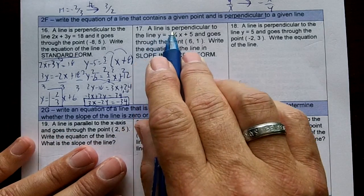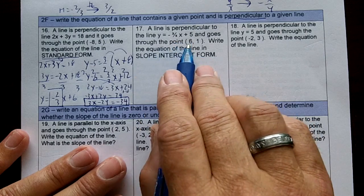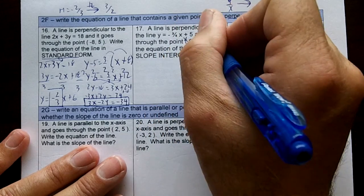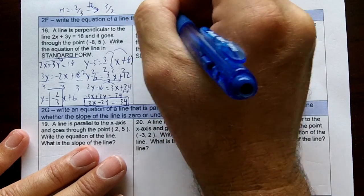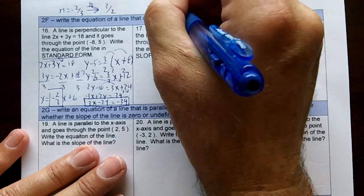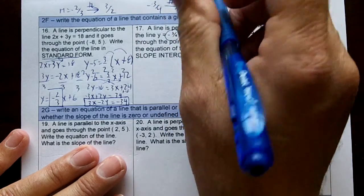Okay, number 17. My line is perpendicular to the line y equals negative 3 over 4x plus 5, and goes through this point. This is my x and my y. Here's my slope. So I'm going to start with negative 3 over 4, and I need to make it perpendicular. So I'm going to flip the slope and switch the sign. So that's my new slope.